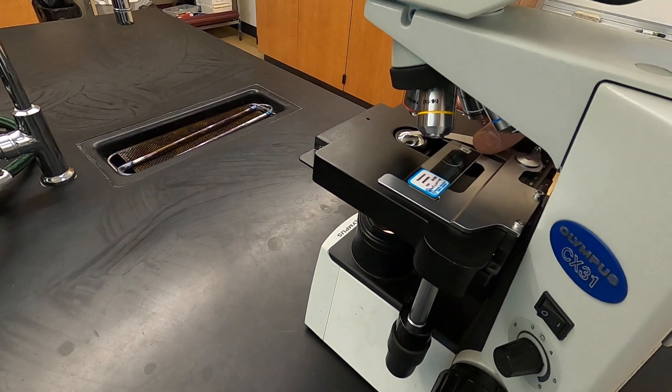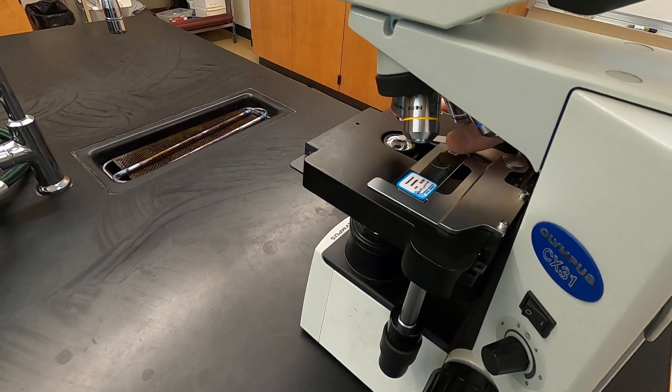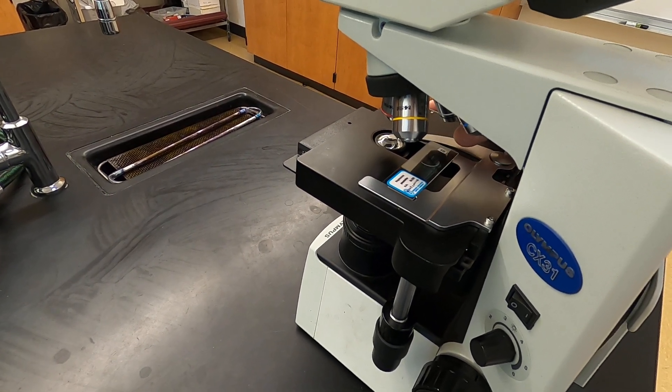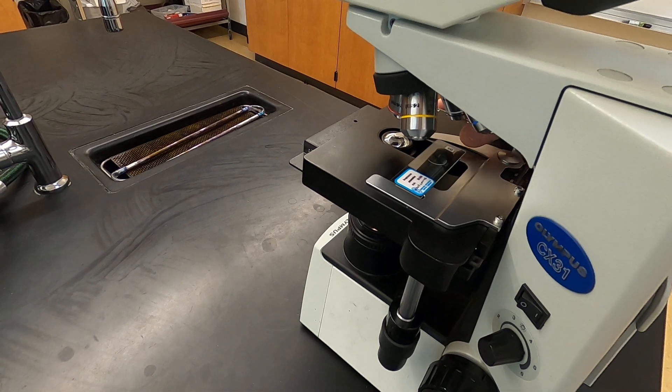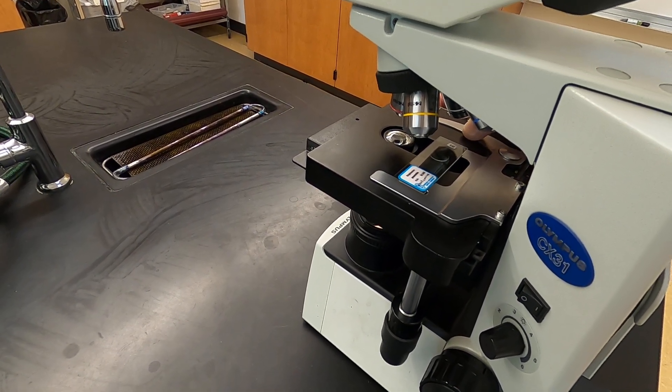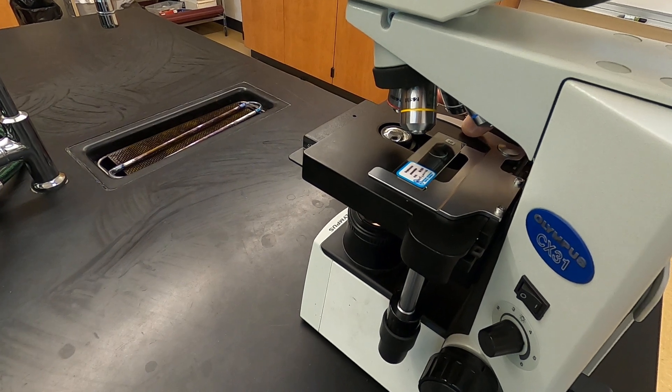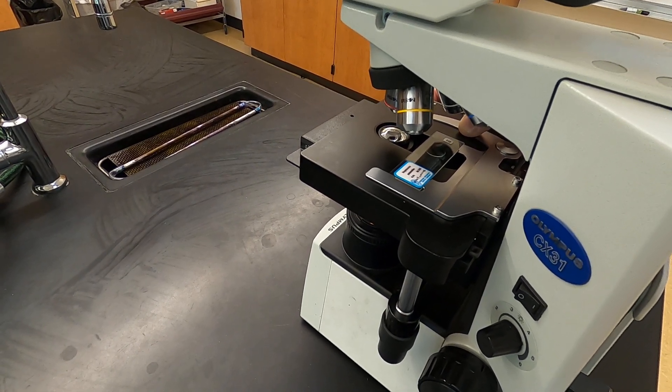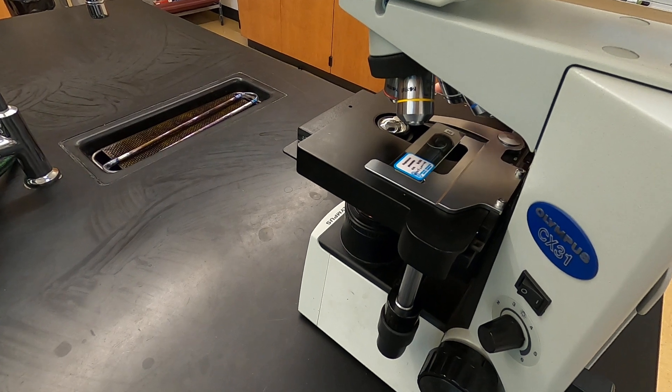There's a retractable arm on this side so we want the slide to sit flat onto the stage. In order to put the slide in initially, we're going to retract this retractable arm to make room for it.